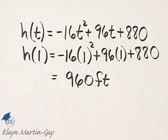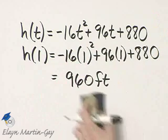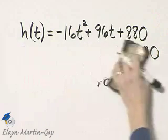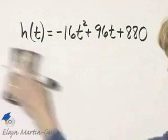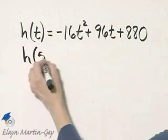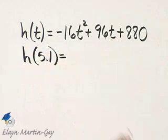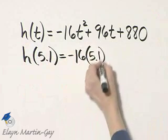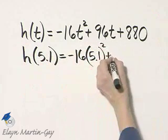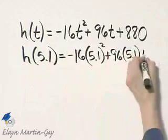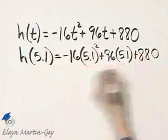Now how do we find the height of the pebble when t is 5 and 1 tenths? That means after 5 and 1 tenths seconds, we would find h of 5 and 1 tenths. So that's negative 16, be very careful, times 5 and 1 tenths squared plus 96 times 5 and 1 tenths plus 880.